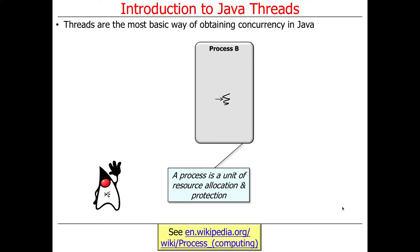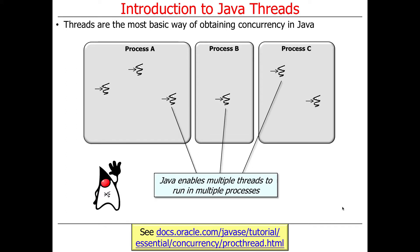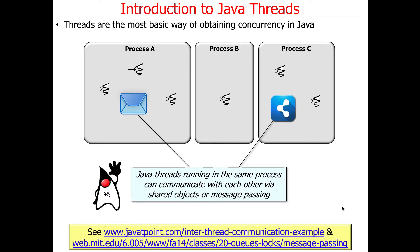The resources in one process are protected against accidental access by threads running in other processes. You can have multiple threads in a process and multiple processes — each process can have multiple threads or just one. You decide as the application programmer how threads are allocated in processes. In Android, an application is typically implemented as a process, so each application typically runs in its own address space. Threads in Java can communicate with each other by either sharing objects or by passing messages to each other.